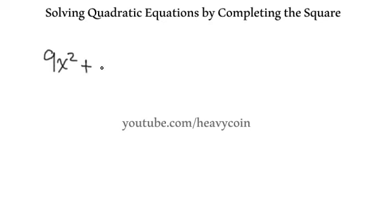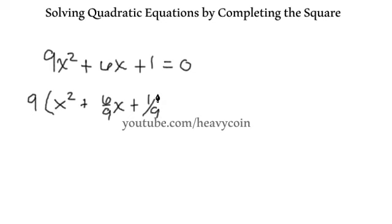9x squared plus 6x plus 1 equals 0. So I'm factoring the 9 out. We have to get it in this form here. There must be a coefficient of 1 in front of the x. Plus, I'm just going to write it like this right now, plus 1 over 9 equals 0.